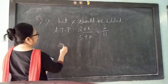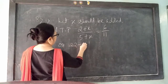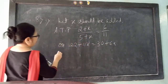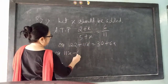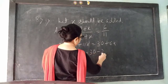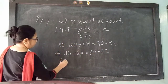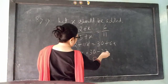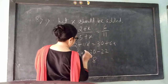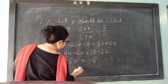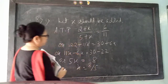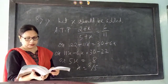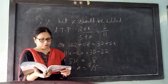Now cross multiply and calculate the value of x: 22 plus 11x equals 30 plus 6x, so 11x minus 6x equals 30 minus 22, or 5x equals 8. So x is coming 8 by 5. So your answer is 8 by 5 should be added to both terms of the ratio 2 is to 5. Clear?